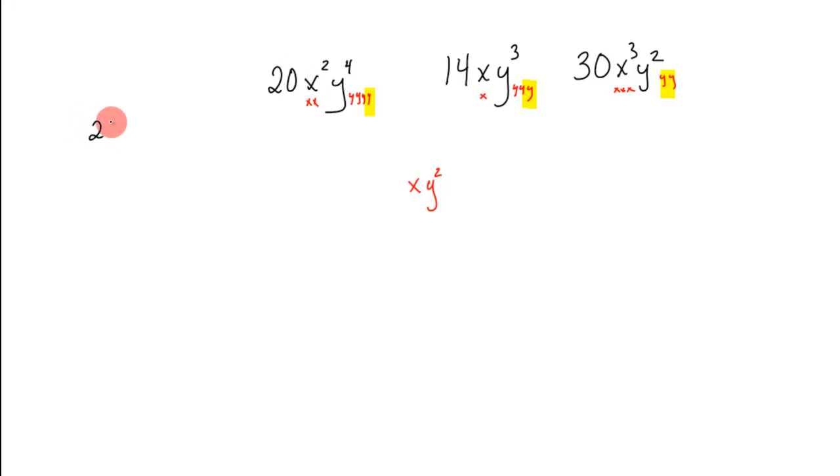Because let's look. Twenty is just four times five, or two times two times five. Fourteen is just two times seven, right? That's it.